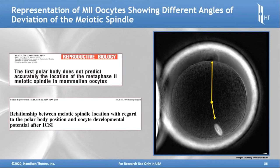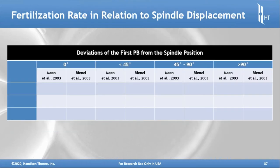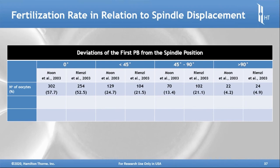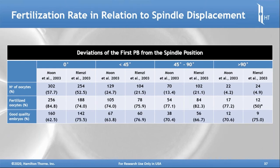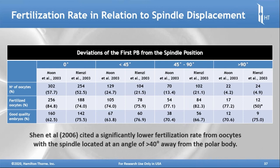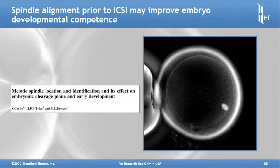Embryologists know that the polar body can slide around before it's fully extruded, while the spindle itself is more fixed in the cytoplasm. Studies cite a significantly lower fertilization rate for cases where the spindle is located at an angle of greater than 40 degrees away from the polar body. This is something that can be further automated and considered telltale with regard to expected outcomes.